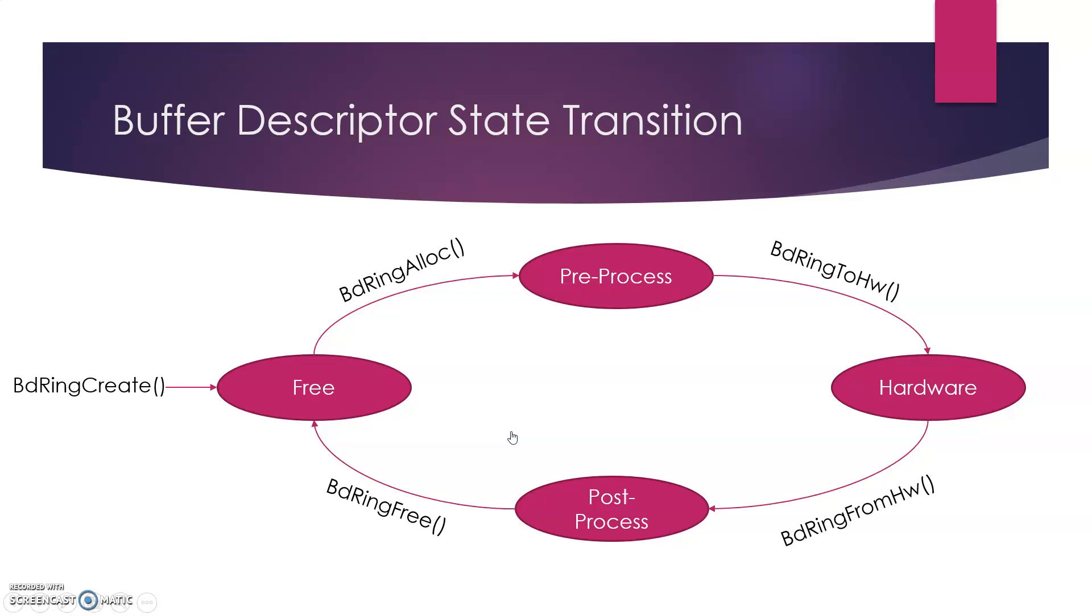Now, when a DMA transfer is to be cancelled before enqueuing it to the hardware, then the application can return the requested buffer descriptors to the free group again using the bdring unallocate function.